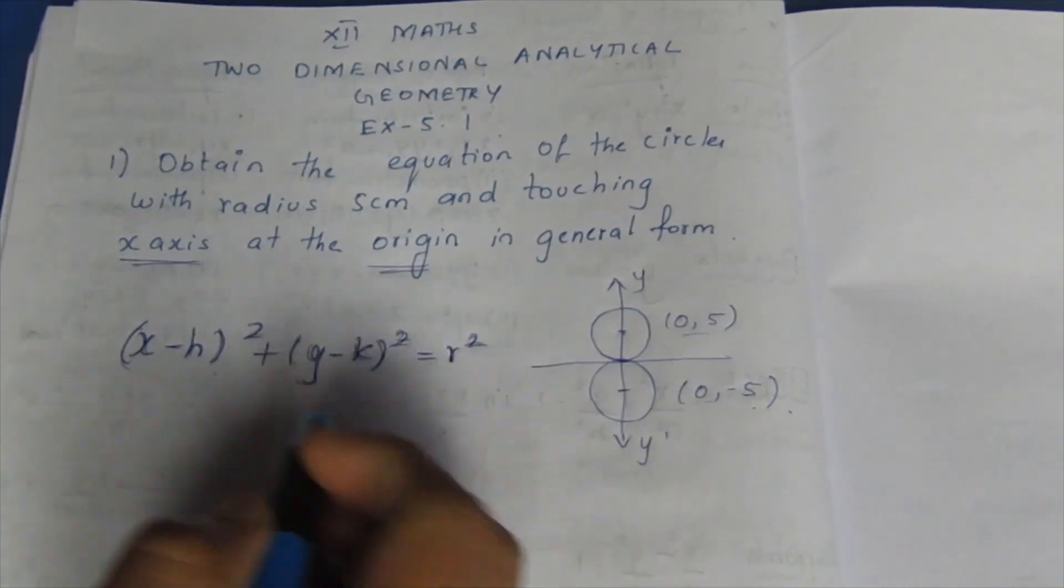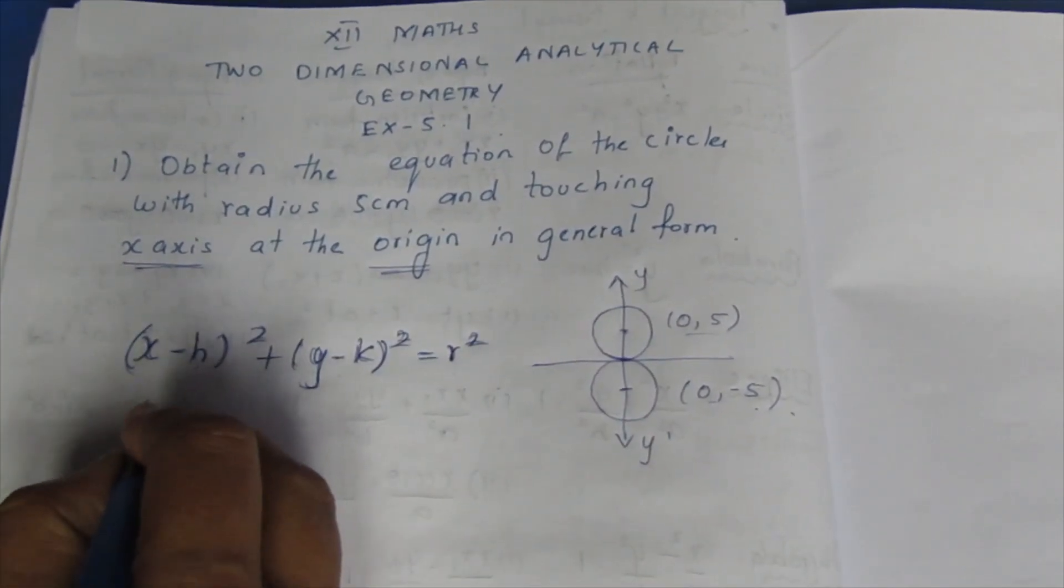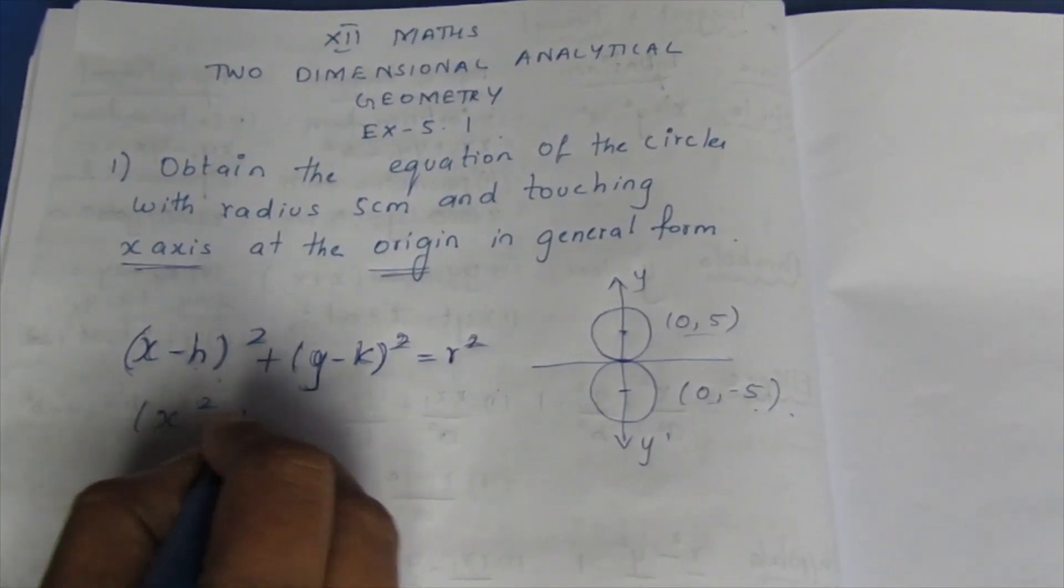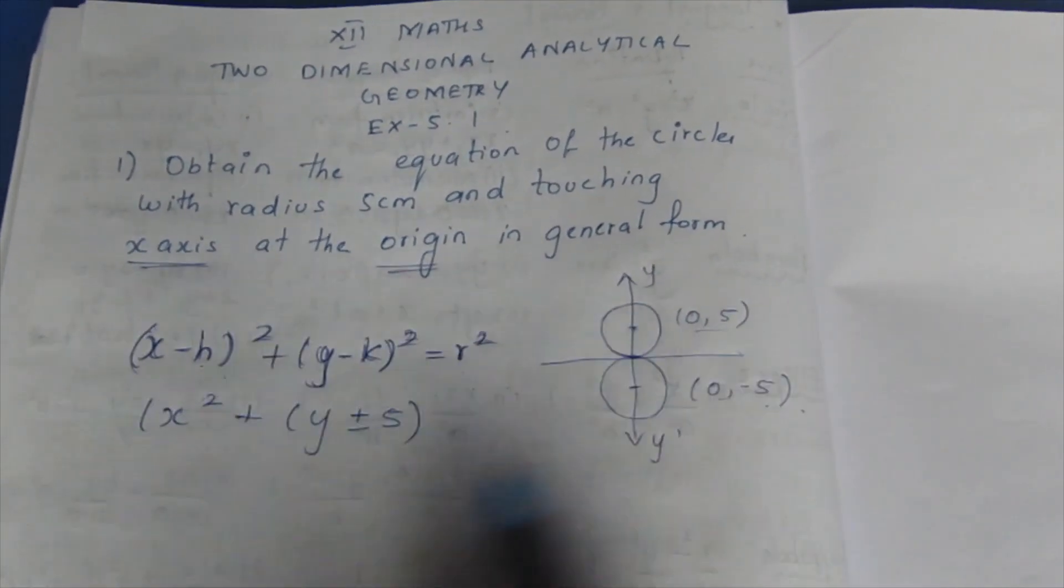So now we can go to the two. X-axis is 0, so x^2 plus y plus or minus 5, we substitute.